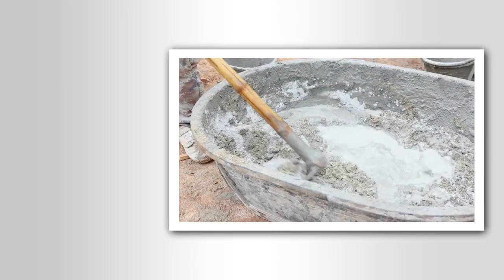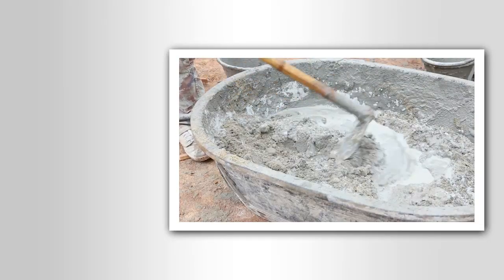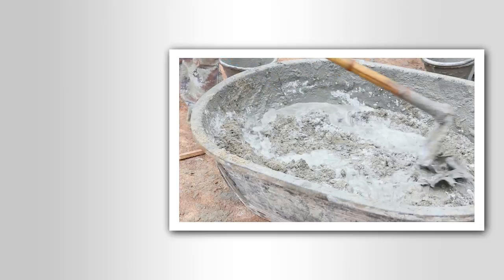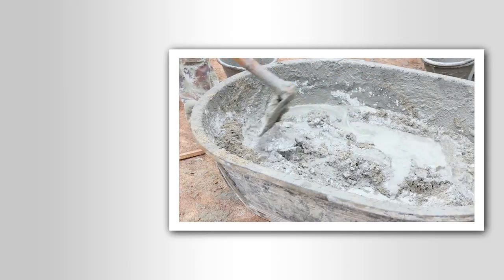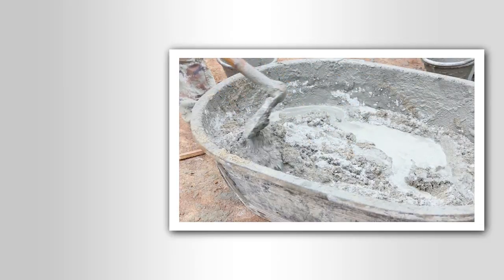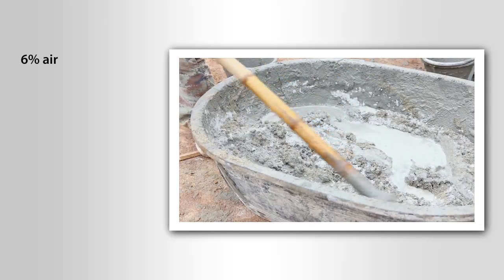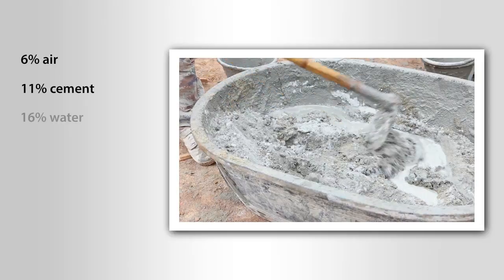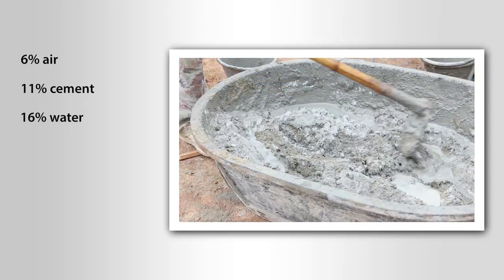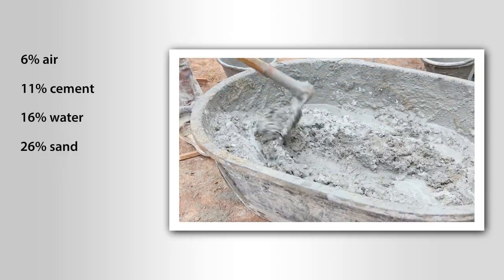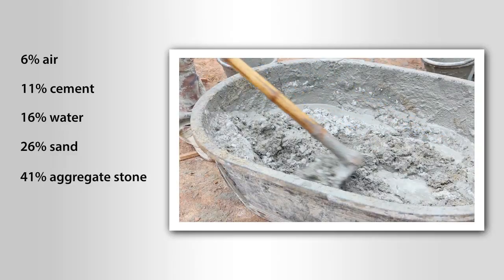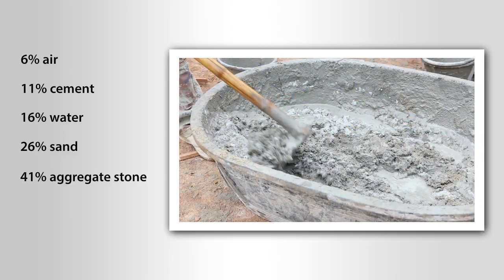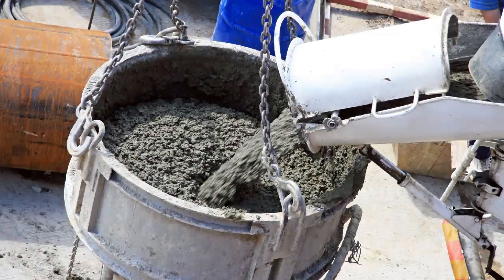Let's mix up a batch by assembling the following items: 6% air, 11% cement, 16% water, 26% sand, and 41% aggregate stone. Agitate these ingredients in a mixer and you have concrete.